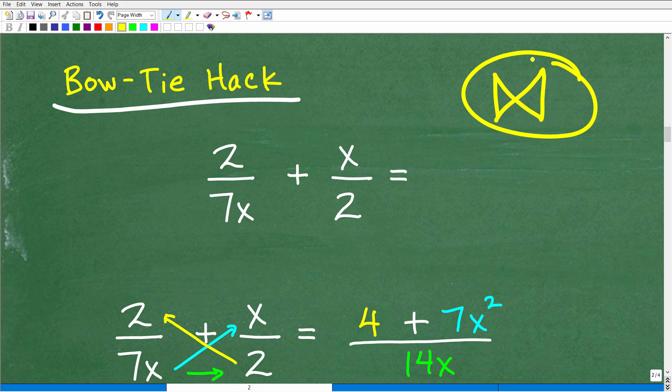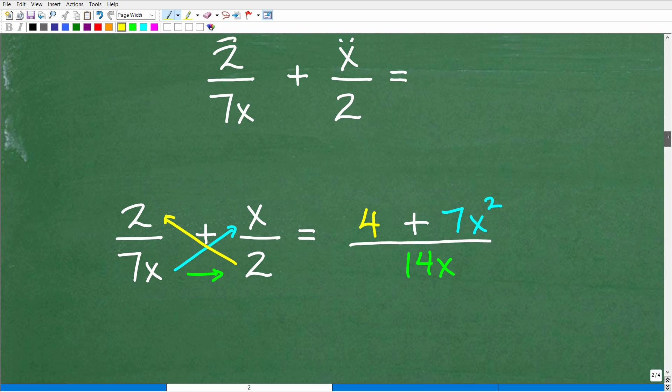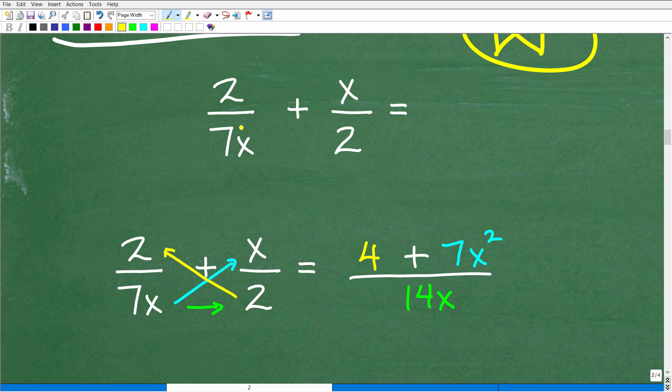Okay. You absolutely need to know this. It's going to make your life so much easier. So let's go ahead and see how it works. So we're going to add these two rational expressions, two over seven X plus X over two, by the way, this works with arithmetic as well. So if you didn't have any variables here, we can do this. So the bow tie method is a very specific technique. Okay. It's a very specific technique, but it's a very specific pattern. All right. So here is how it goes.